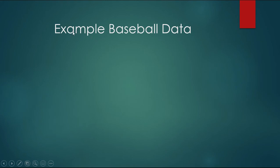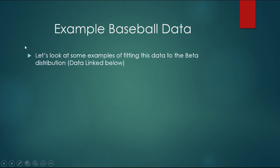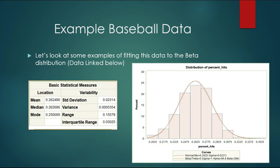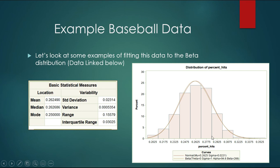Let's look at a really cool example. This is a baseball dataset — all we have is the percentage of hits that batters in the dataset made. You can check out the data from the link below and also find it on our website. Looking at the basic stats, you can tell it approximates the normal distribution fairly well. In the software output, you can see it approximates the normal distribution well, and the beta distribution fits with these two parameters shown here.